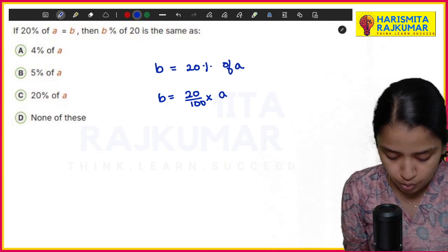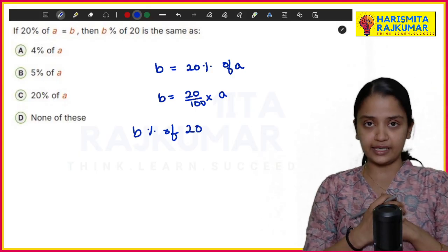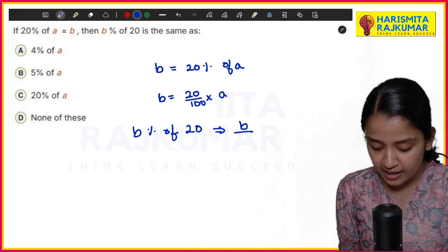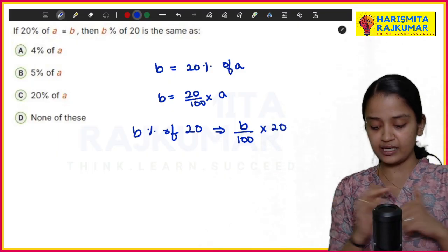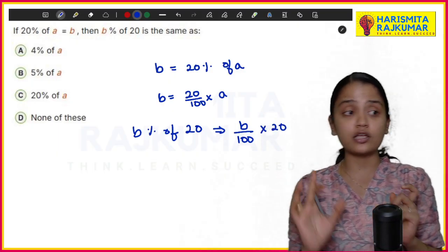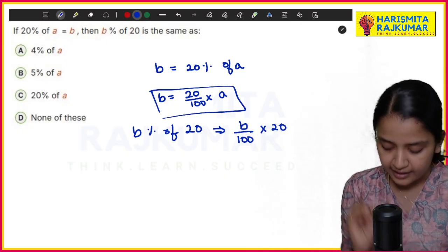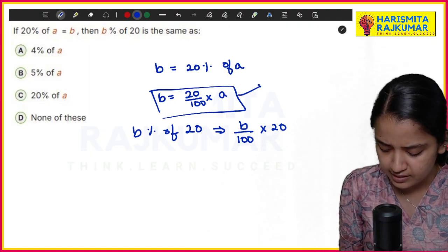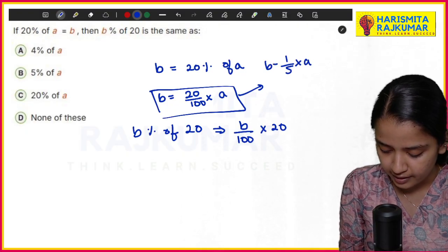So b is nothing but 20/100 × a. The question asks for b% of 20. So b% means b/100 of 20, which is the question: b% of 20. Instead of b I can write 20/100 × a, and simplify this. 20 divided by 5 is 1/5 × a, that is b.